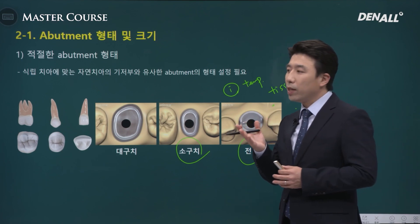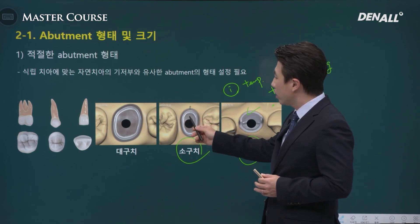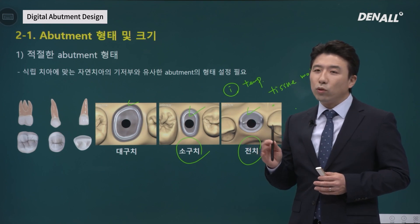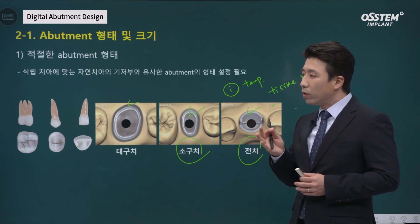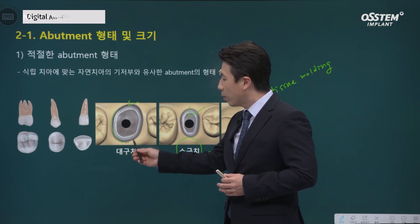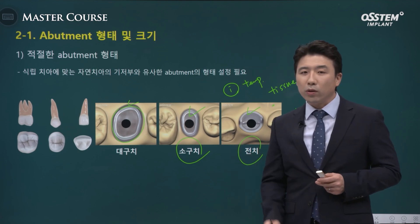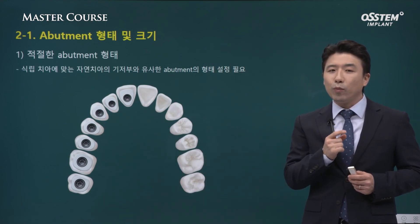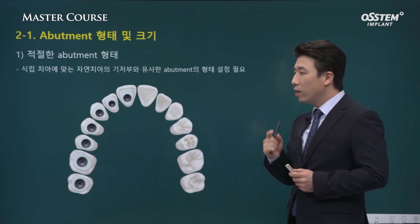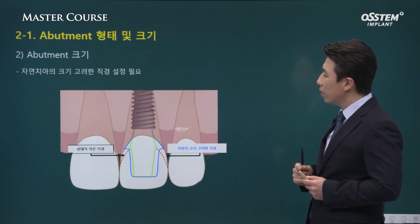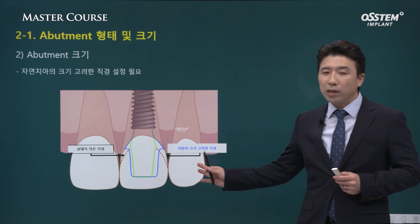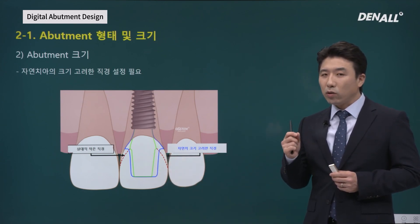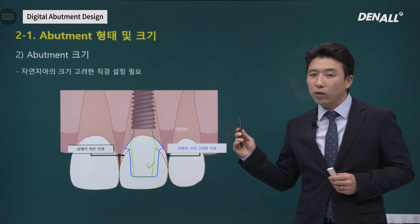Tissue molding in the anterior zone is very essential. In the case of the molar area, it is not as essential. But for smooth oral hygiene and for aesthetic factors, we need to find the right profile. Various shapes need to be considered. It is very important that we understand the different characteristics, shapes, and sizes of different teeth — not just buccolingual but also mesiodistal width. We should provide provisionals in the anterior zone for tissue molding before moving on to the abutment designing process.